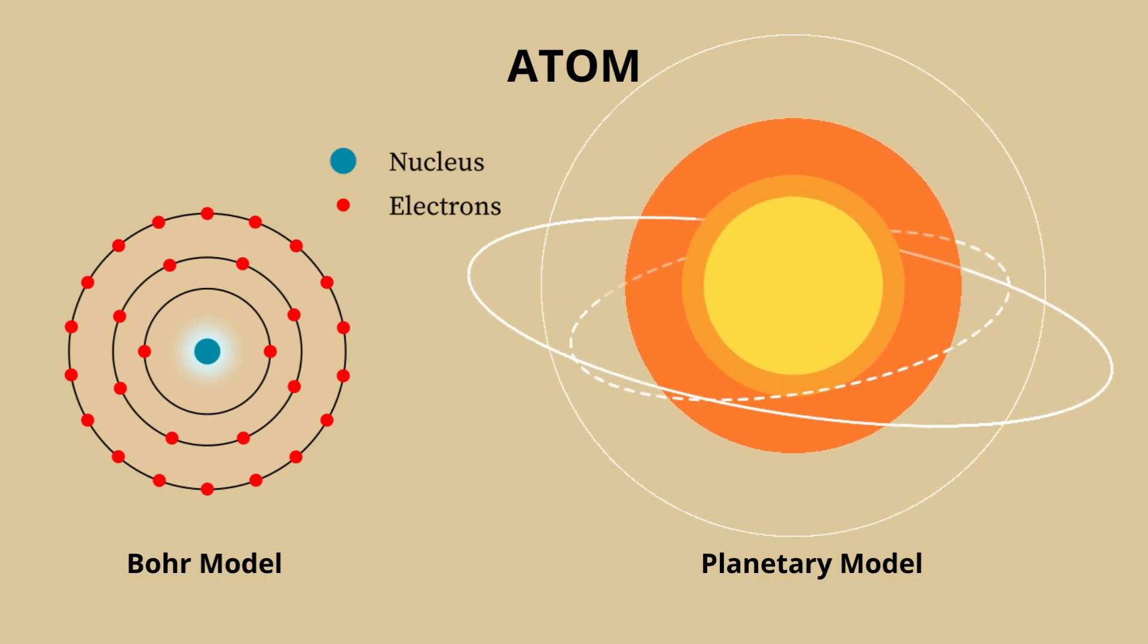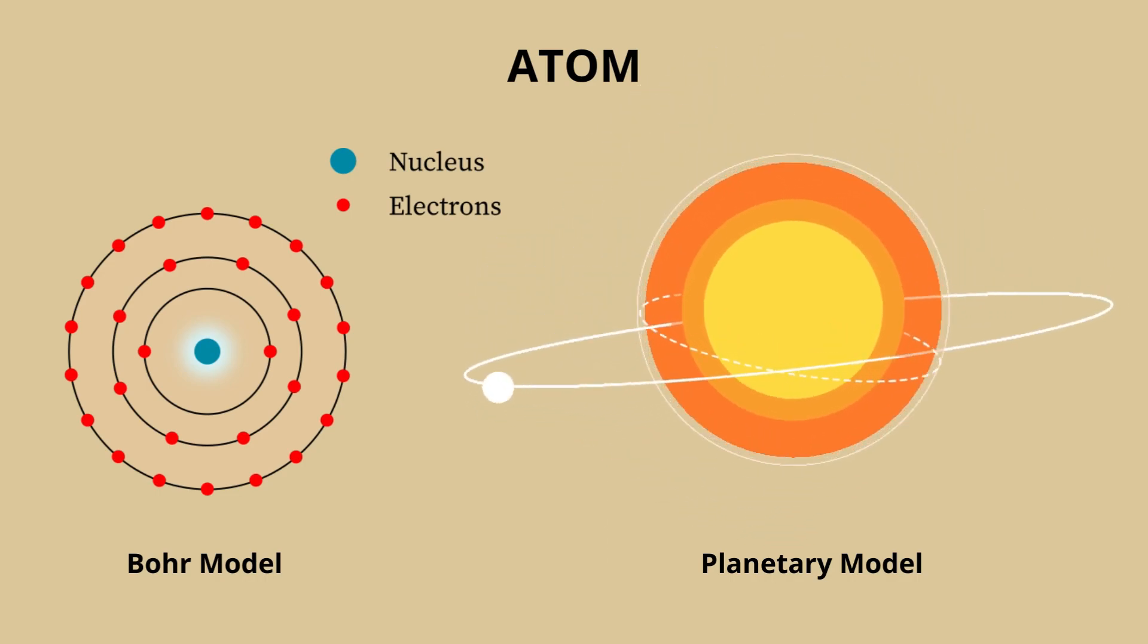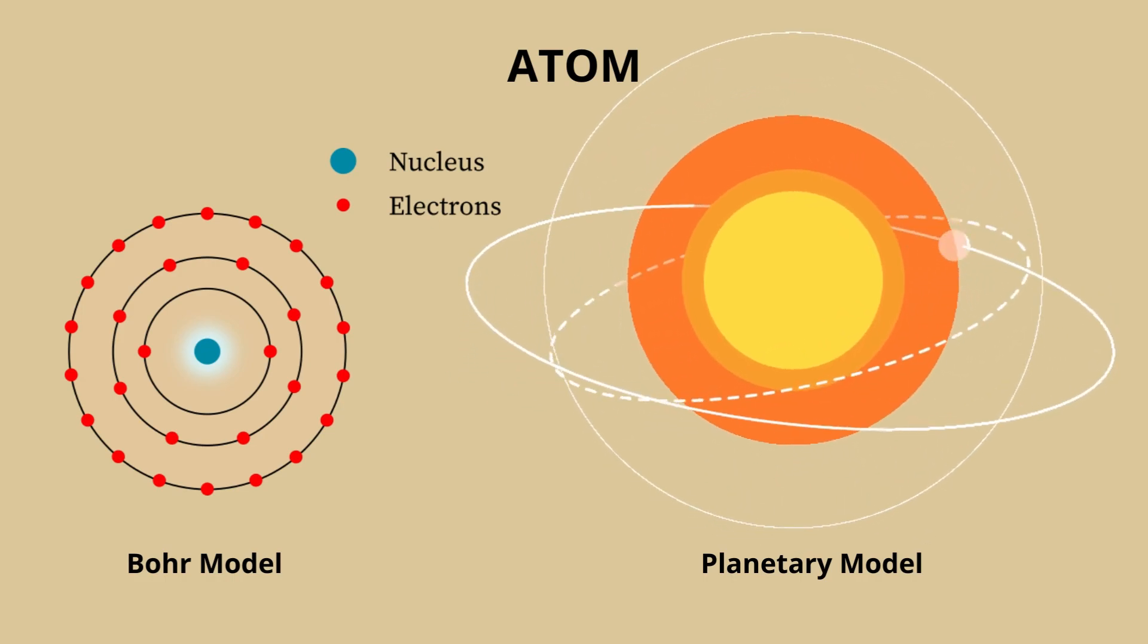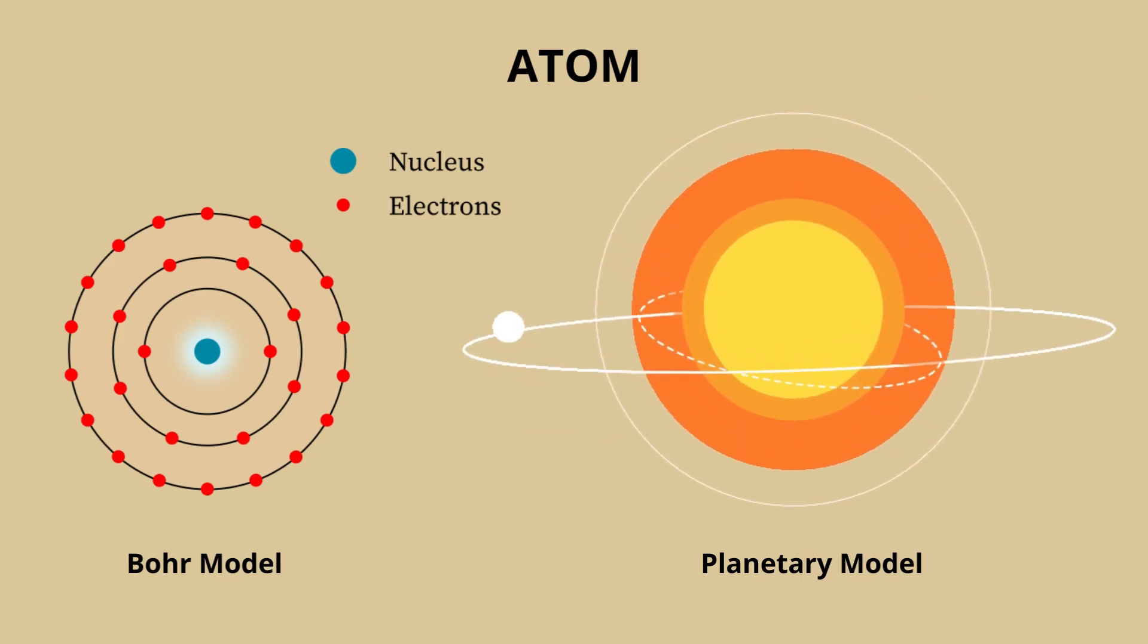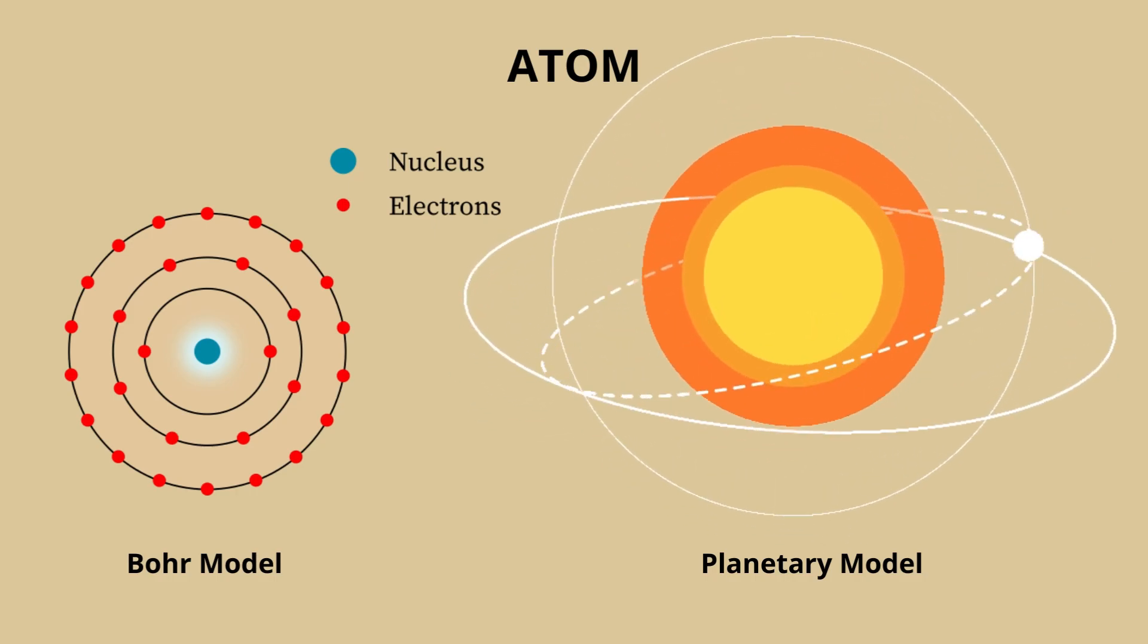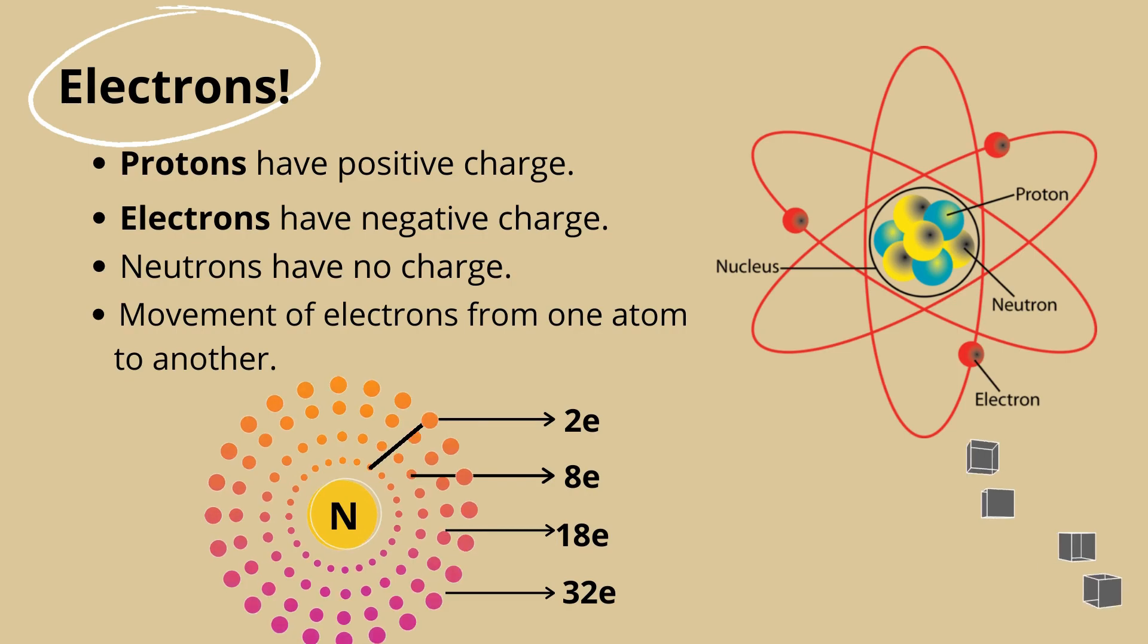If the naked eye could see the atom, it would look like the Bohr's model, and similarly like the planetary model next to it, with the nucleus in the center, which consists of the protons and the neutrons, and the electrons orbiting around it. Protons have positive charge and electrons have negative charge.